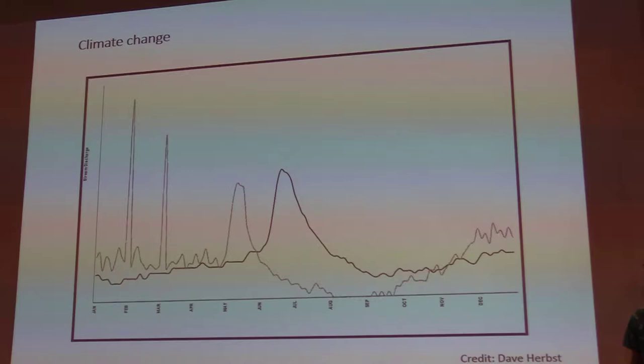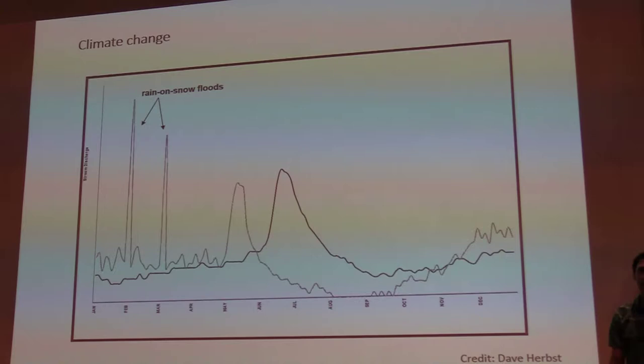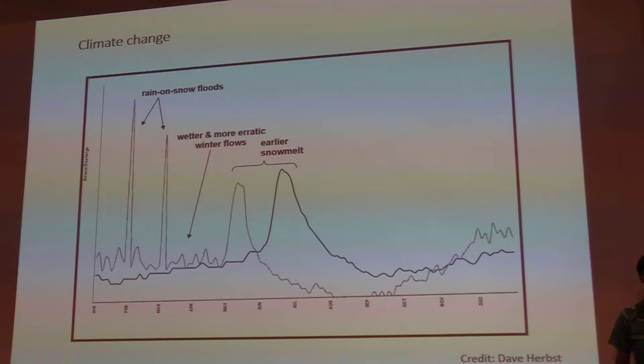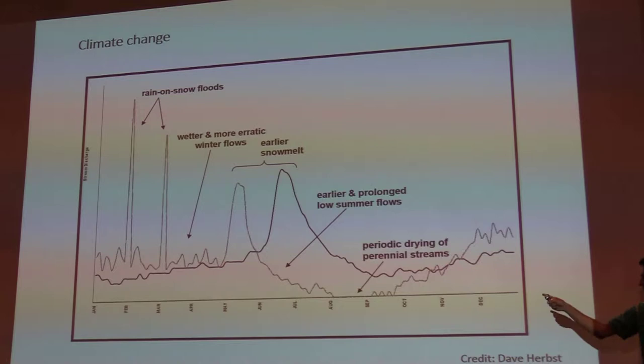I want to highlight some things from this projected hydrograph. We have rain-on-snow floods in the wintertime, wetter and more erratic winter flows, a shift in peak snowmelt to earlier in the year, earlier and prolonged summer low flows, and a drying of perennial streams — a shift in flow regime from perennial to intermittent.